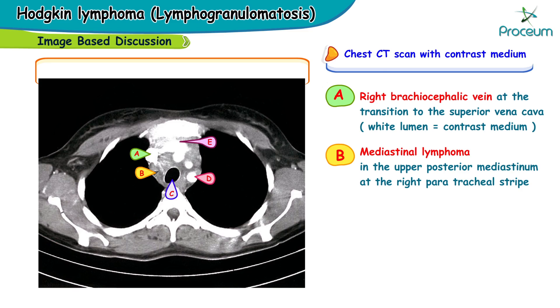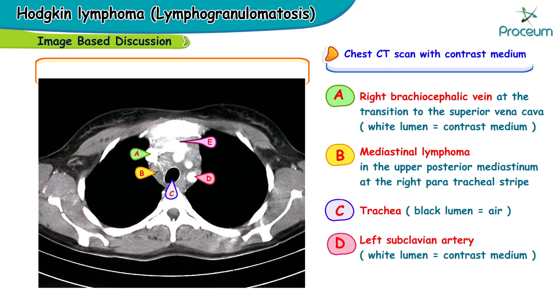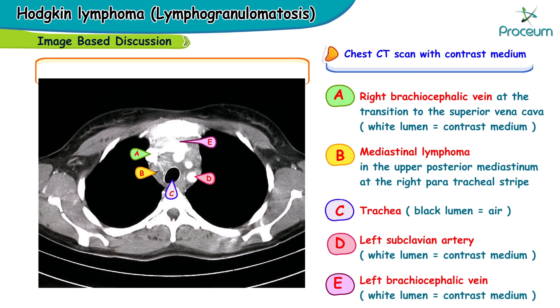The trachea is visible with a black lumen indicating the presence of air. Here's the left subclavian artery and left brachiocephalic vein.